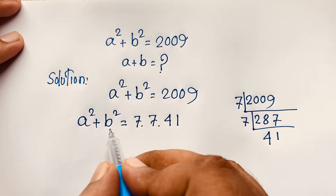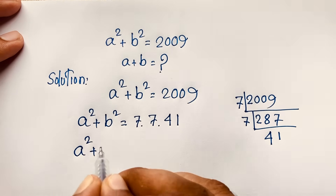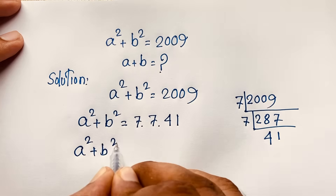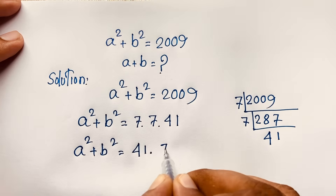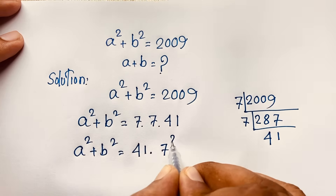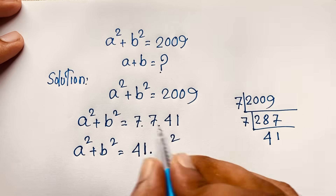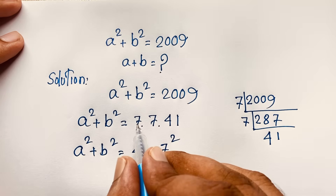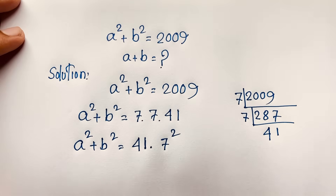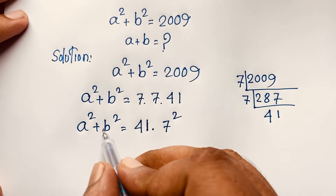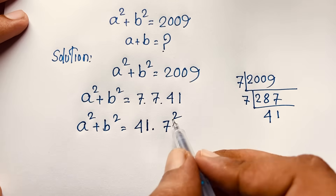So a squared plus b squared equals 41 times 7 to the power 2. That is, 41 times 7 squared, where 7 squared equals 49. So a squared plus b squared equals 41 times 7 squared.